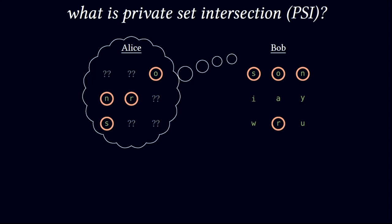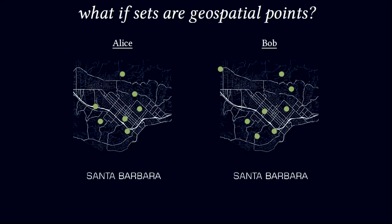This essentially means that Bob does not learn any of the elements of Alice's set outside the common elements O, N, R and S. This traditional problem of PSI has been well studied in the literature.